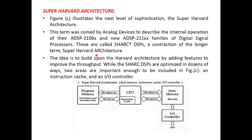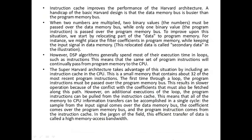The Super Harvard architecture is generally referred to as SHARC DSPs. The idea was to build upon the Harvard architecture by adding features to improve throughput. While SHARC DSPs are optimized in many ways, the major enhancements of Super Harvard over Harvard architecture are with respect to the instruction cache and the I/O controller.